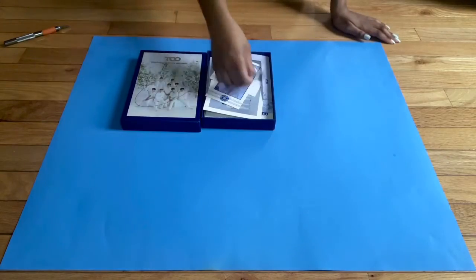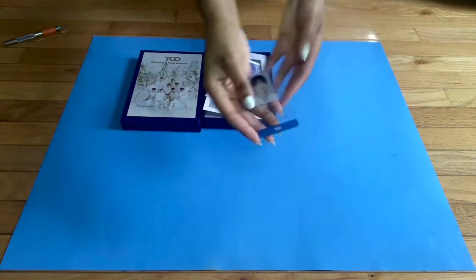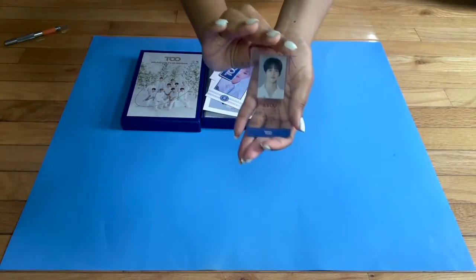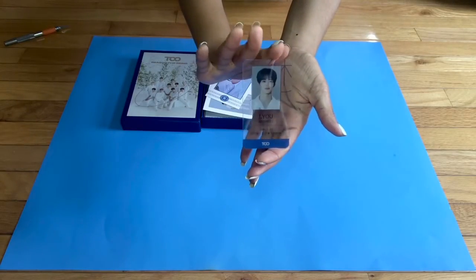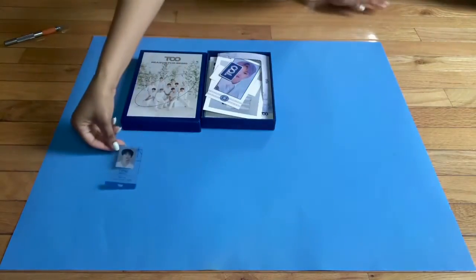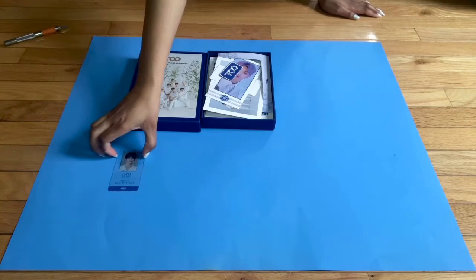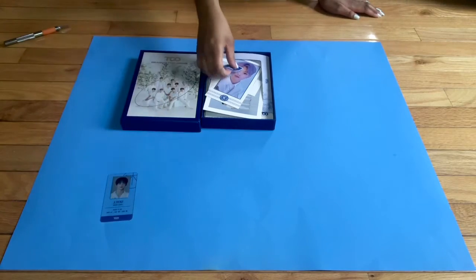So the album actually comes with a lot of stuff. This is a name photocard. I guess you can think of it as a clear photocard, but it also has their name and their stage name and their birthday on it.